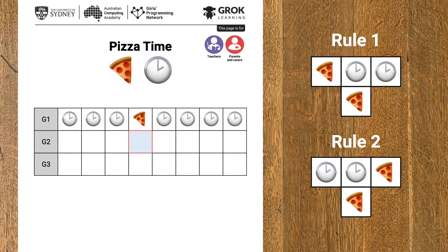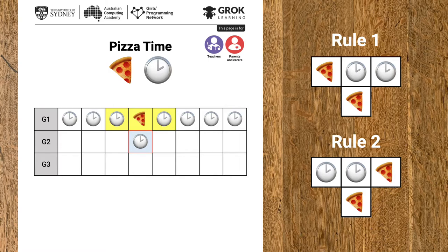Let's go through it step by step and show you how it works. Let's start with this square. Look at the three emoji in the generation above. We have clock, pizza, clock. Now that's neither of the two rules for this game, so that square has to be a clock. Moving to the left, the three emoji above are clock, clock, pizza. Well that's rule number two, so this square becomes pizza. Left again, the three emoji are clock, clock, clock. Well that's not a rule, so this square is a clock.